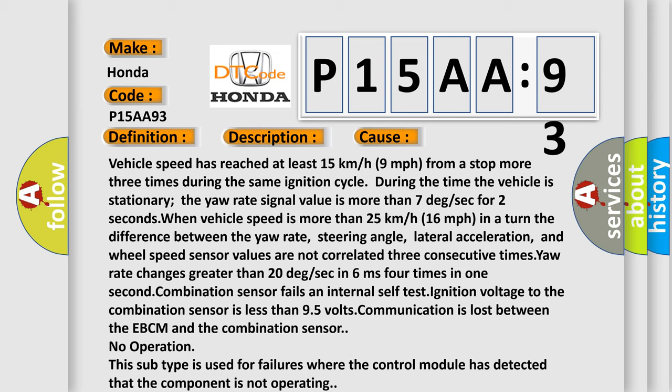Combination sensor fails an internal self-test. Ignition voltage to the combination sensor is less than 9.5 volts. Communication is lost between the EBCM and the combination sensor. No operation: this subtype is used for failures where the control module has detected that the component is not operating.